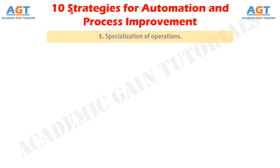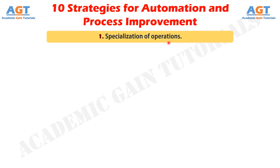Strategy No. 1: Specialization of Operations. The first strategy involves the use of special-purpose equipment designed to perform one operation with the greatest possible efficiency. This is analogous to the specialization of labor, which is employed to improve labor productivity.